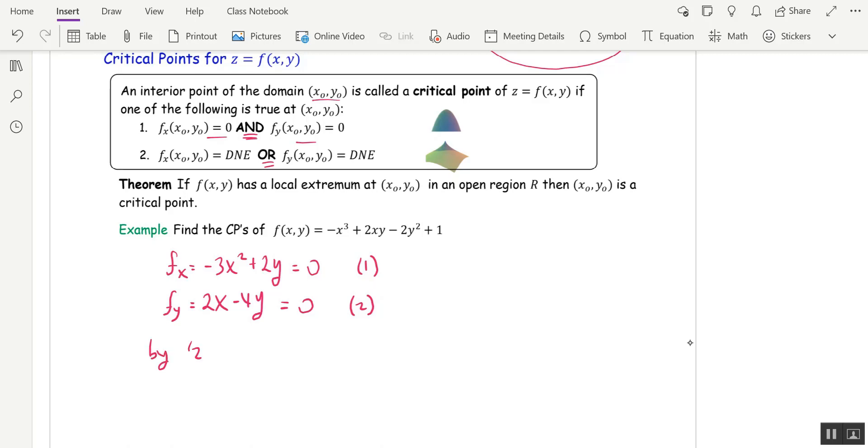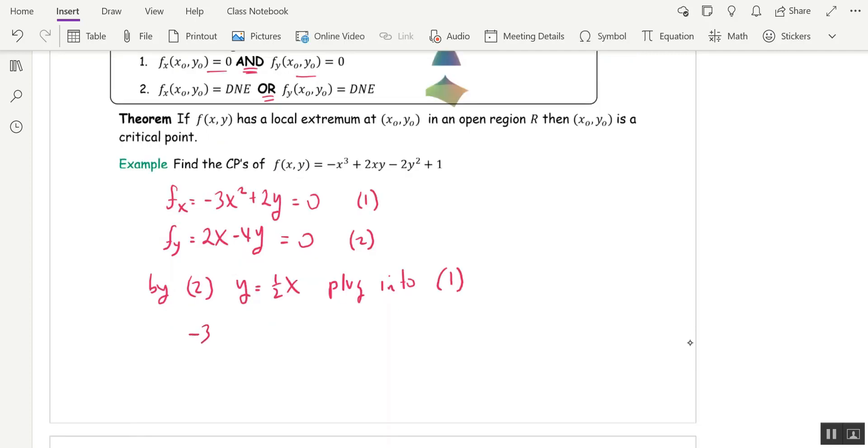Both of these equations have to be true. So I'm going to call this 1 and I'm going to call this 2. I think the easiest way to solve this system would be to look at equation 2. So by equation 2, we can solve for y. y is a half x. And we can plug that into equation 1. When we do that, we get negative 3x squared plus x equals 0.